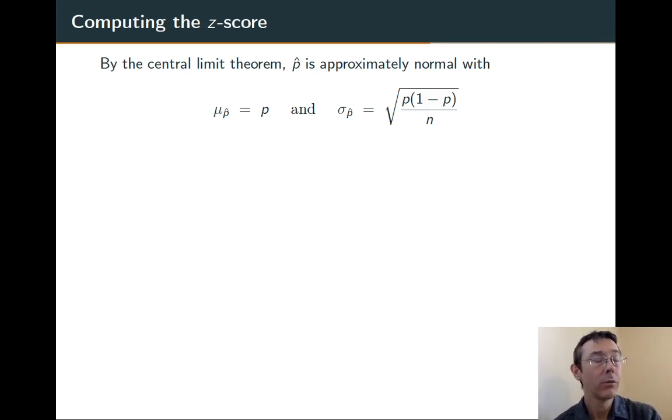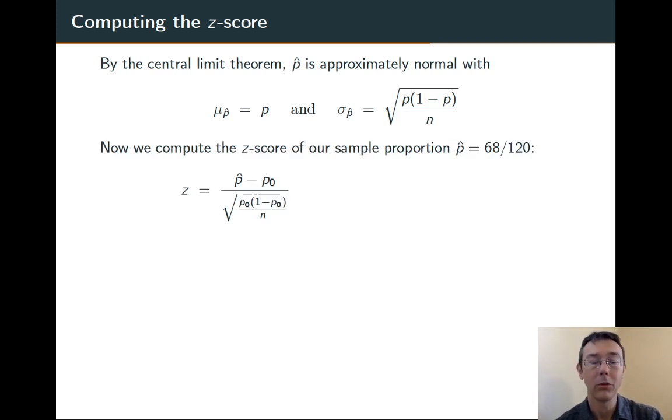So here we've assumed the null hypothesis is true, so our p is going to be 0.65. The sample proportion that we got is 68 over 120. We just need to plug those things in. Like so. Do a little bit of simplification, and we get a z-score of negative 1.91.